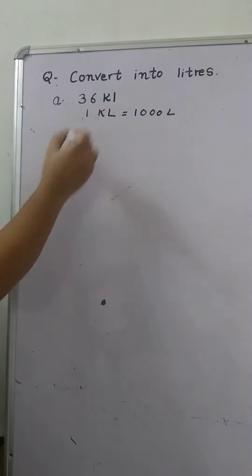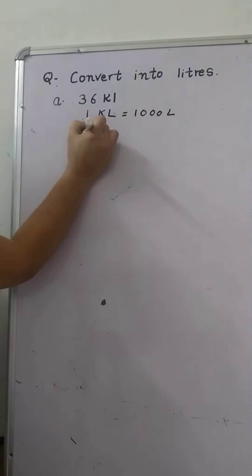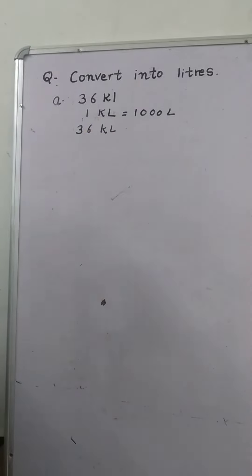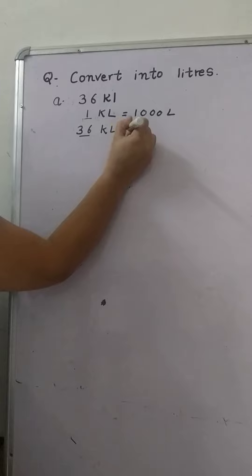And we have to find for 36 kiloliter. However, as you can see, we know for 1 and we are finding for 36. It means we are finding for more. And whenever we find for more, then we will always multiply.